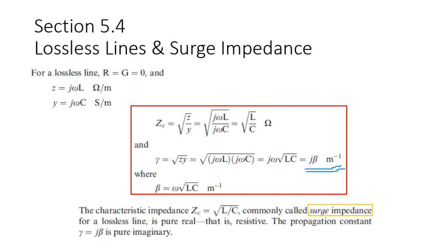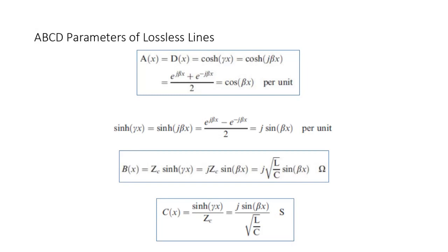I'm explaining this and we still have students who don't understand or don't listen to the lecture. We are explaining and repeating ourselves, and students still just plug in their numbers without really realizing what they're doing. So beta times X — X is the length of the conductor. This will be cosine beta X. And the sine hyperbolic becomes J sine beta X. So we can find A, B, C, D. It simplifies from hyperbolic to just sine — an angle in radians.